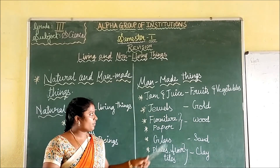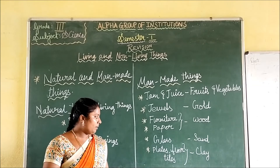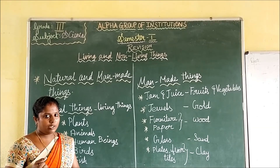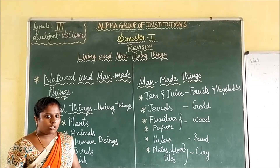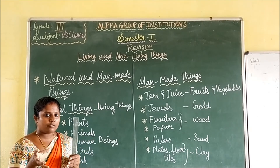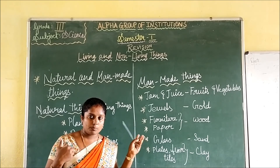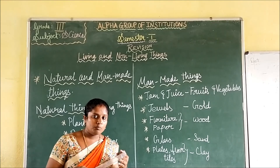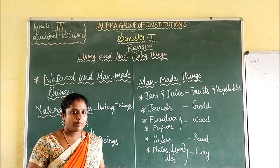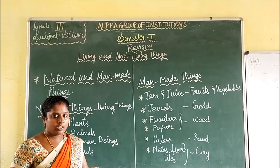Man-made things: from fruits and vegetables — juice and jam; gold becomes jewels; wood becomes furniture and paper; sand becomes glass; clay becomes plates and floor tiles. Baby grows into a human being, puppy grows into a dog. By these points — breathing, movement, need for food and water, life span, reproduction, and growth — you can differentiate living and non-living things.